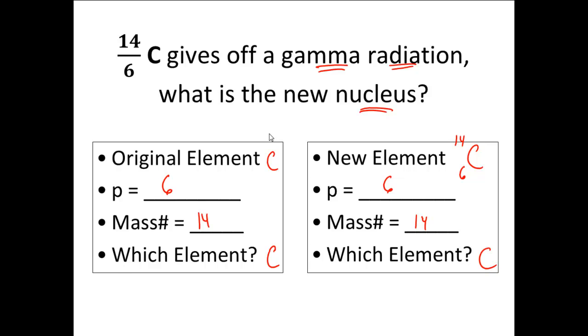All right, guys. I can finish this off with one simple nuclear equation. And I would put down 14 over 6 carbon is going to yield 14 over 6 carbon plus 0 0 gamma. And that's the way I would conclude this lesson here today. All right, guys. You have an example of each of the different kinds of the most common forms of nuclear decay and nuclear radiation. Thanks for tuning in. Catch you later.